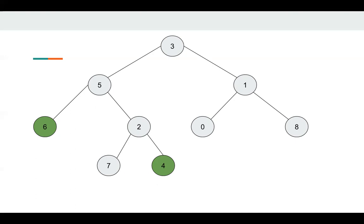For LeetCode 236, since p and q always exist in the tree, there are always two nodes. For example, p is 6 and q is 4. The lowest common ancestor is 5. Node 4 returns 4 to its parent. For node 2, node 7 returns null and node 4 returns 4, so node 2 returns 4. Node 6 returns 6. In node 5, since there's something in both the left and right children, node 5 is the common ancestor, so node 5 returns 5 to node 3. Node 3 then returns 5.